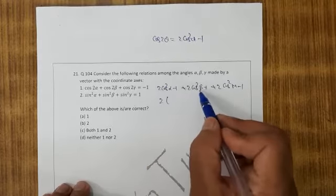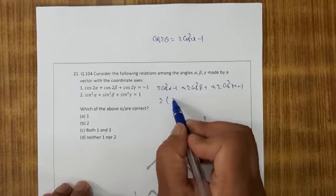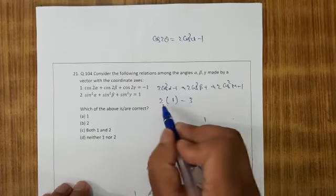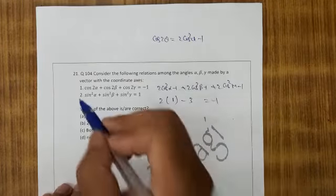2 cos square alpha plus cos square beta plus cos square gamma equals 1. Minus 1 minus 1 minus 1 equals minus 3. 2 minus 3 is minus 1. So this is correct.